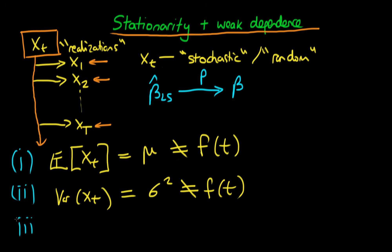The last condition for a process to be stationary, or technically for a process to be weakly stationary or covariance stationary, is that the covariance between Xt and Xt plus H, where H is some period in the future, has got to be some function of H and importantly not a function of time. Those are the three conditions we require for a process to be stationary.